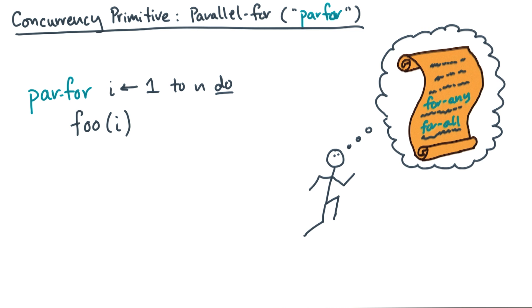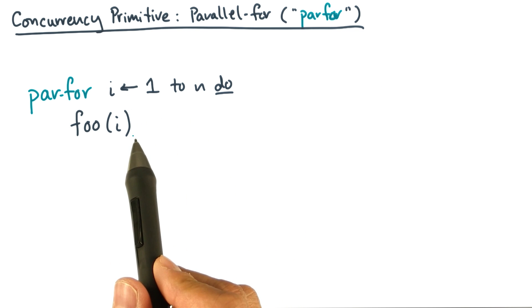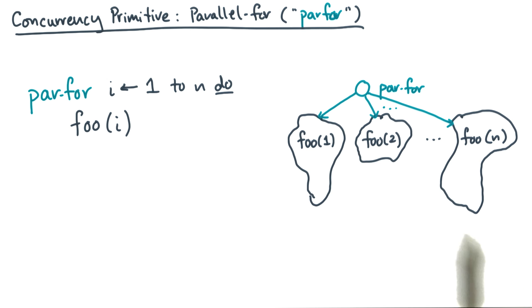So what does a par-for mean? When you use a par-for, you're saying that all iterations are independent of one another. In other words, you can execute the iterations in any order. To put it in DAG terms, a par-for creates n independent subpaths. You can think of this as executing n independent spawns simultaneously if such a thing were possible.